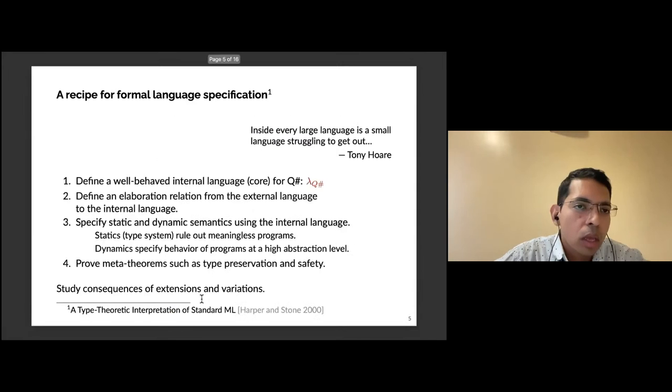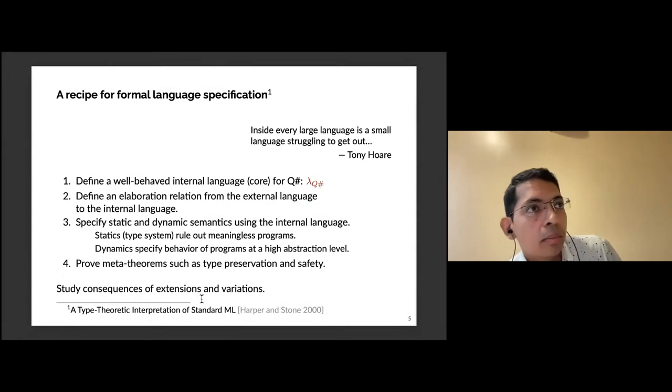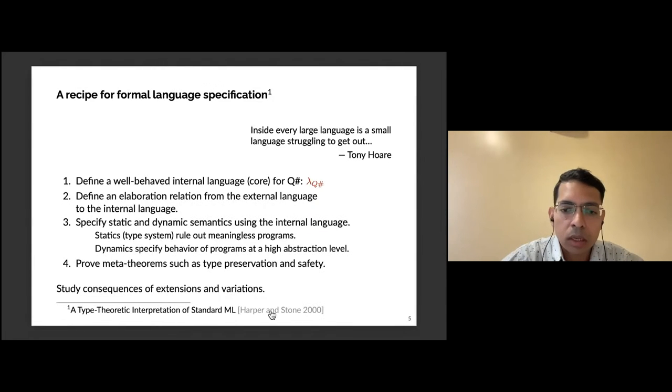This is a general recipe we followed, designed by Harper and Stone in 2000 working on Standard ML. Every language ultimately has a small language inside of it which shows its core. First, you design a well-behaved internal language—in our case we're calling it lambda QSharp. Then you define a translation relation from the surface language to this core. The advantage is that once you have this core, you can do all of your statics and dynamics on the smaller core and prove theorems. We can also easily extend the surface language and see how it affects the core language.